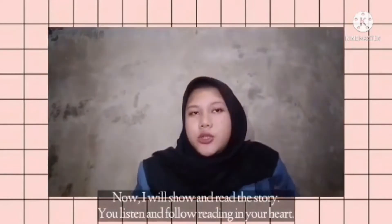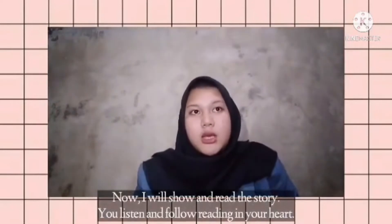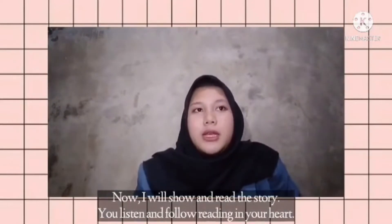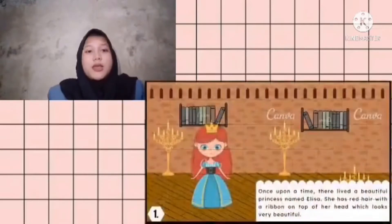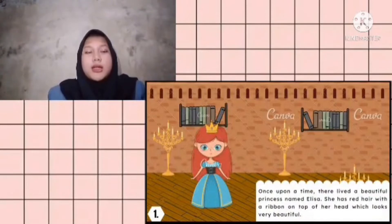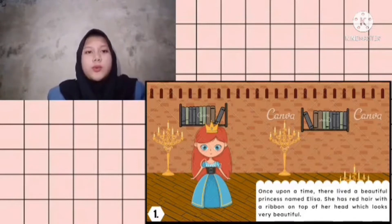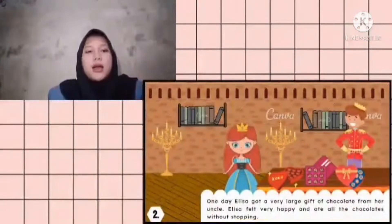Now I will show and read the story - you listen and follow the reading in your heart. Let's start. Once upon a time, there lived a beautiful princess named Elisa. She has red hair with a ribbon on top of her head, which looks very beautiful.